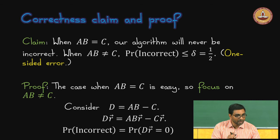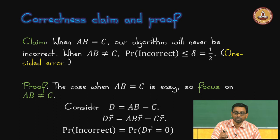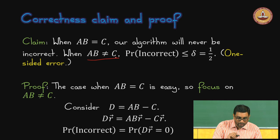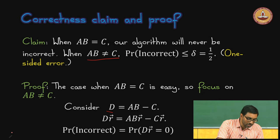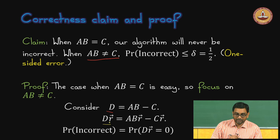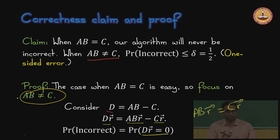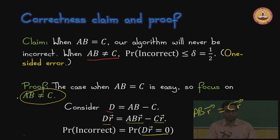The only interesting part is when AB is not equal to C. Our algorithm, if it was correct, should be able to say that AB is not equal to C. What we will have to ensure is that given AB is not equal to C, our algorithm will say incorrect with probability at most delta. We will therefore focus on AB not equal to C. We define D equals AB minus C, and so D times r equals ABr minus Cr. Our algorithm checks if ABr equals Cr, which is equivalent to checking whether Dr equals zero. If Dr equals zero it is incorrect, because we assumed AB is not equal to C and Dr equal to zero would fool us into thinking AB equals C.